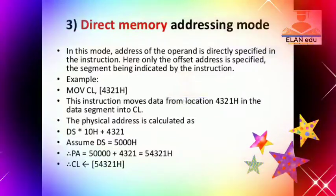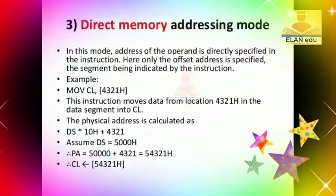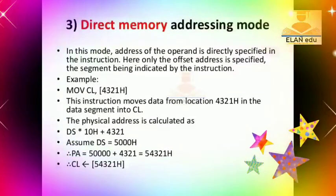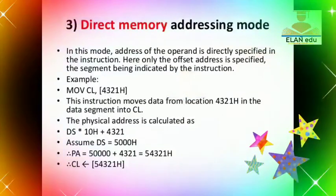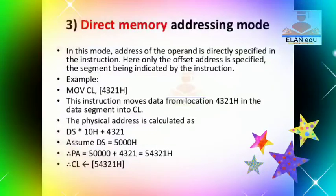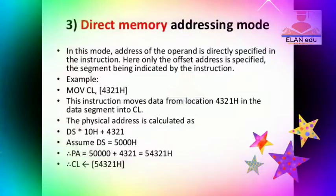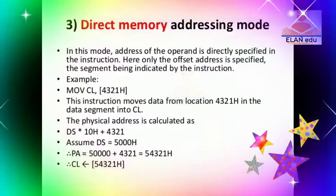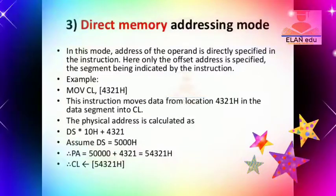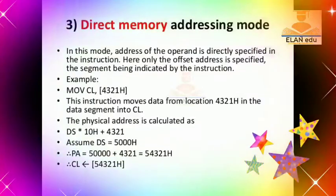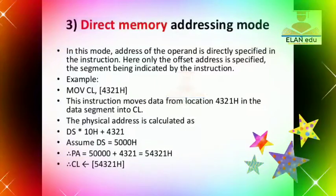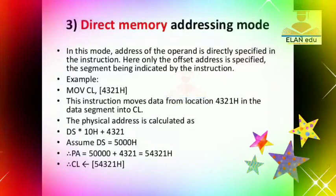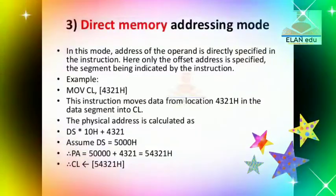For example, MOV CL, 4321H — 4321H is a hexadecimal number, which is 16-bit hexadecimal data. We can move data from CL to the data segment using the physical address. We assume the data segment is 5000. For the physical address calculation, we use the data segment value and add the offset 4321H. The 8086 has 16 data lines and 20 address lines, so we use the physical address calculation accordingly.